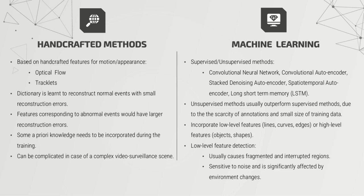In machine learning, some supervised and unsupervised methods include convolutional neural networks, stacked denoising autoencoders, and long short-term memory. Unsupervised methods tend to do better than supervised ones due to the diversity of annotations and small training data sizes. These methods usually incorporate low-level features such as lines, curves, and edges, or high-level features such as objects and shapes. The problem with using only low-level feature detection is that it causes fragmented and interrupted regions, is sensitive to noise, and is significantly affected by environmental changes.